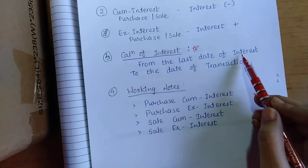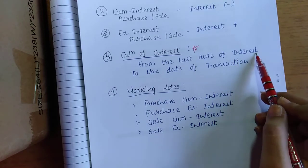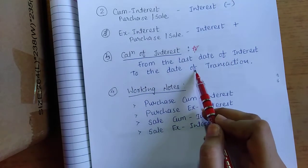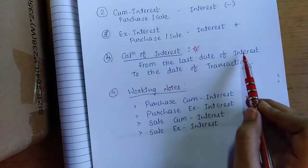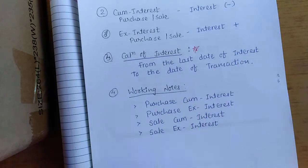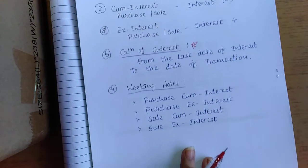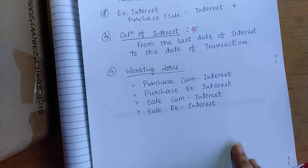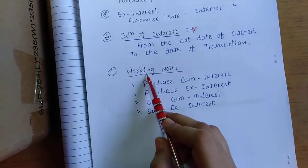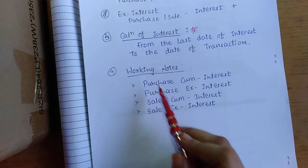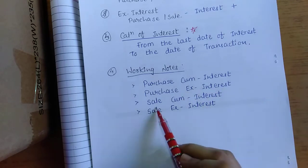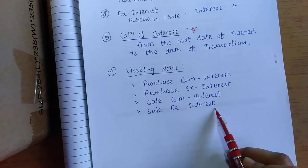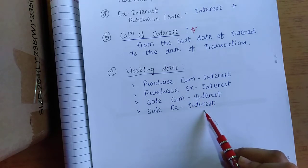That means from the last time interest was received to the transaction date. We will see this in further examples. Number four: I have given you the working notes format. Total four formats are there — purchase cum interest, purchase ex interest, sell cum interest, and sell ex interest.